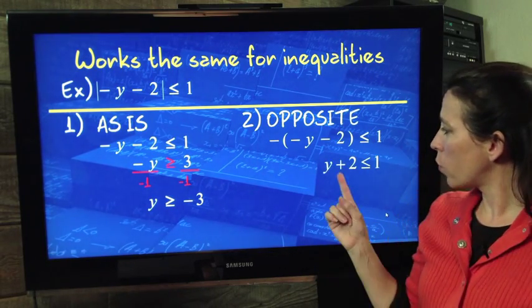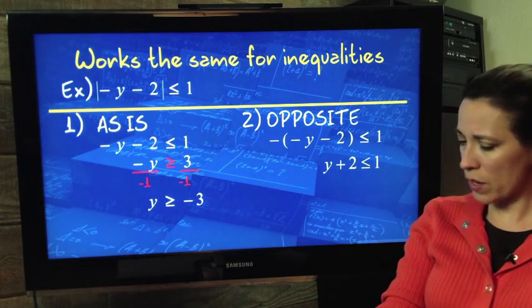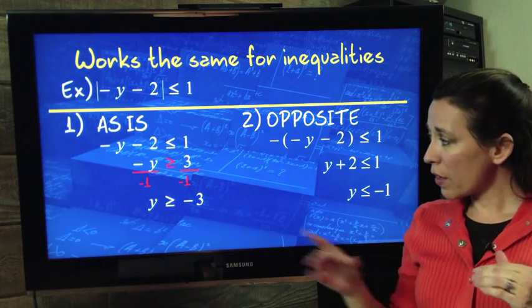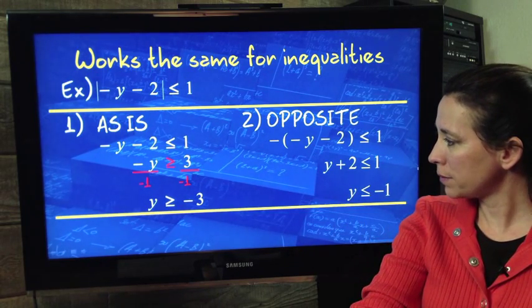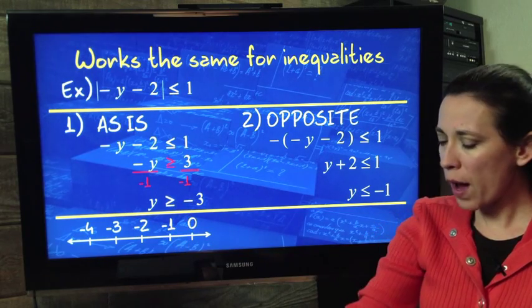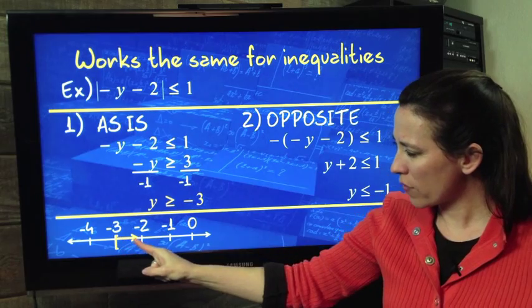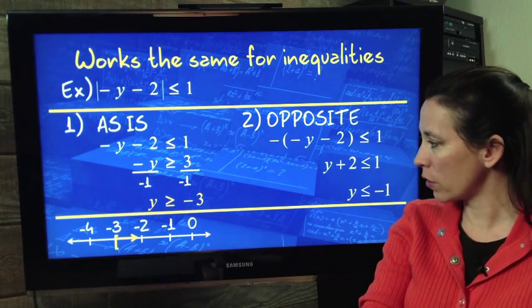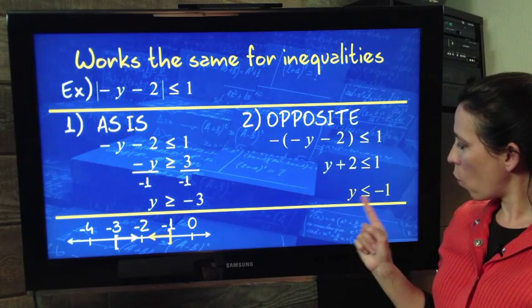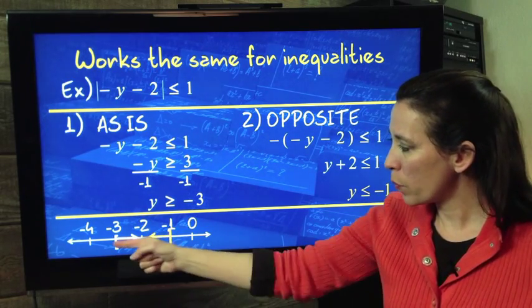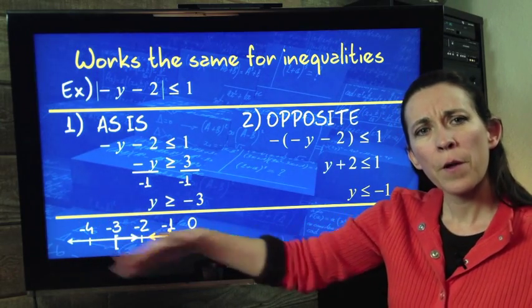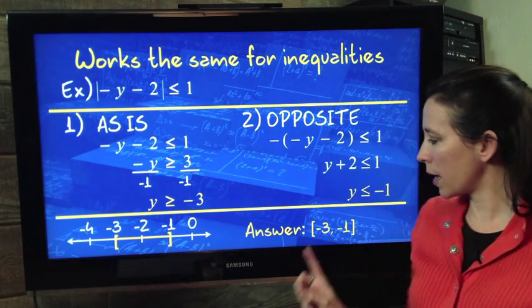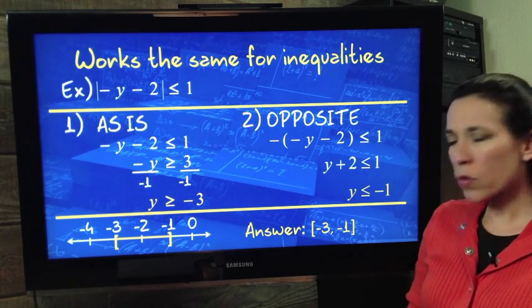And we get y is greater than or equal to negative 3. Then we solve this side. Distribute the negative 1. We get a positive y plus 2 less than or equal to 1. So y is less than or equal to negative 1. Now let's take a look how we can put these two together. Both of these have to be satisfied because we've got a less than 1. So on the left, we have y greater than or equal to negative 3. So this is what the graphing on the number line would look for just this portion of the solution. You have the bracket because it's or equals to. If we looked at this solution, y less than or equal to negative 1, we have the bracket at negative 1, but it includes all the solutions to the left. Well, if it has to satisfy both, where do these two overlap? Right there in the middle. Between negative 3 and negative 1. So our answer in interval notation is between negative 3 and negative 1.